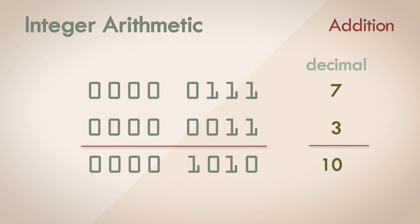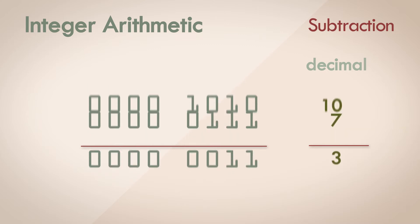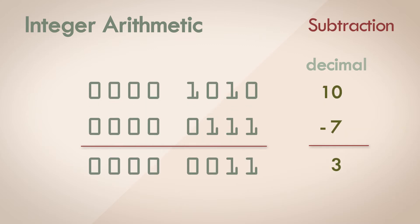Fixed point subtraction is the same as addition, there's no difference in the operation. If we're subtracting 7 from 10, for example, we first convert 7 into its 2's complement form. That's the same as taking the negative of the number. Once we do that, the bitwise operation is the same as addition.